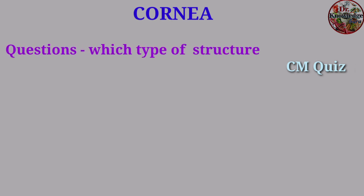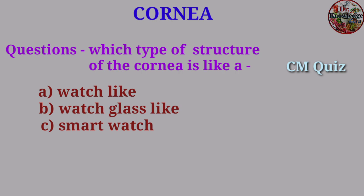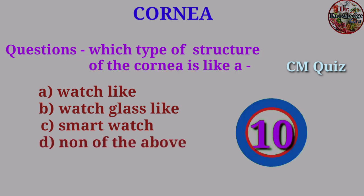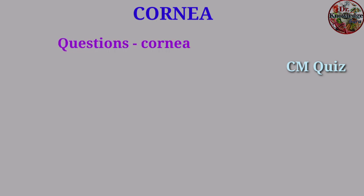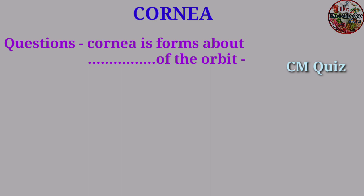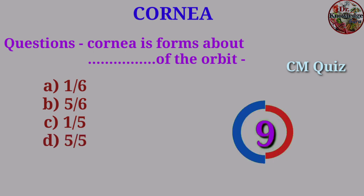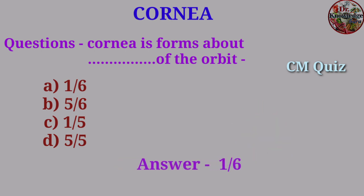Question: Which type of structure does the cornea resemble? A. A watch, B. Watch glass, C. Smart watch, D. None of the above. Answer: Watch glass like. Question: Cornea forms how much of the orbit? A. 1/6th, B. 5/6th, C. 1/5th, D. 5/5th. Answer: 1/6th.